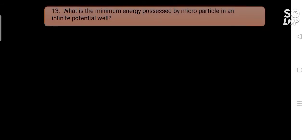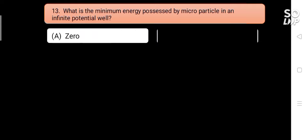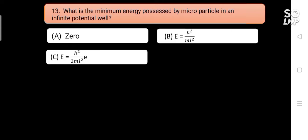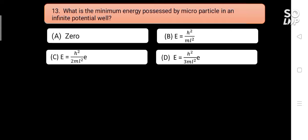What is the minimum energy possessed by a microparticle in an infinite potential well? Options are: A) zero, B) E = h²/2mL², C) E = h²/2mL², D) E = h²/8mL². Answer is D) E = h²/8mL².